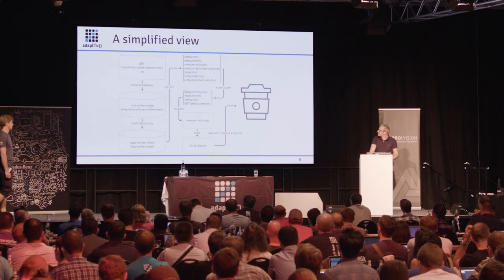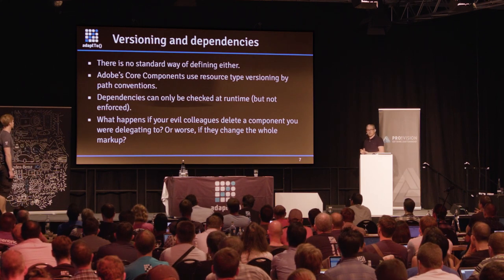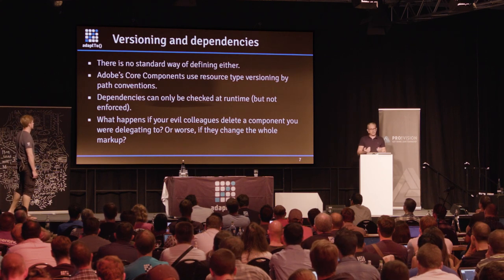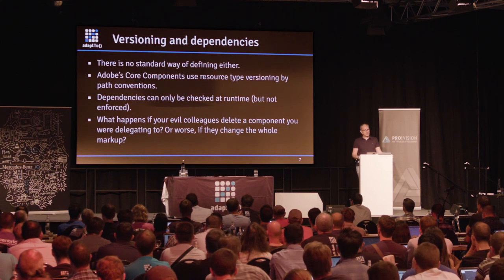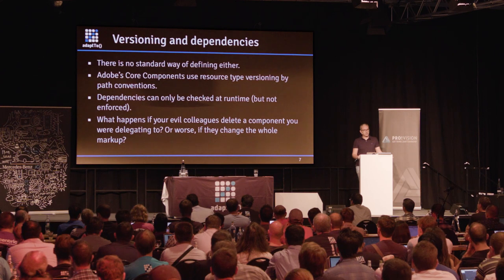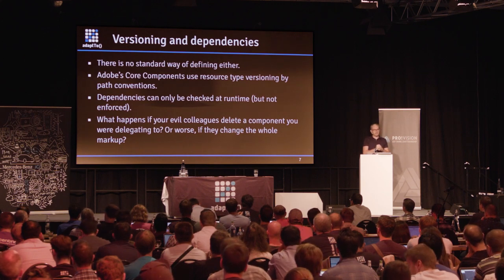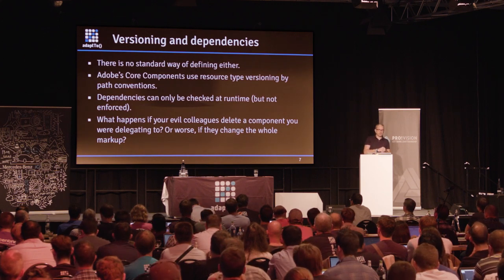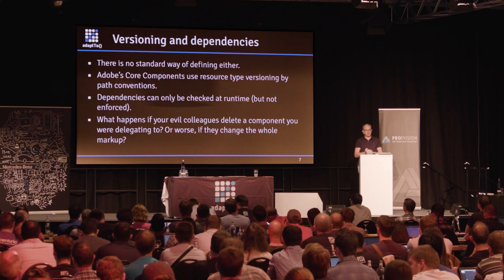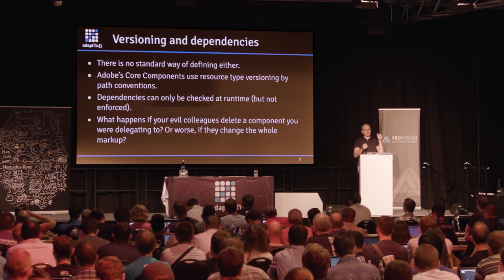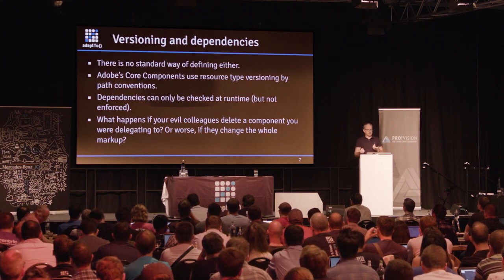In all this, we haven't been talking about dependencies or versions — because they don't exist currently. With core components, we tried to implement versioning as a segment of the resource type. That works, but it's not very granular. Some components are in version one, some in version two — you can only define major versions, with no way to define patch or minor versions.